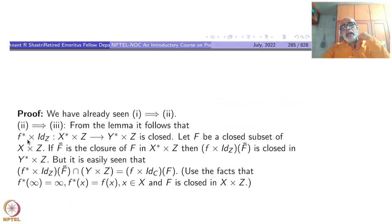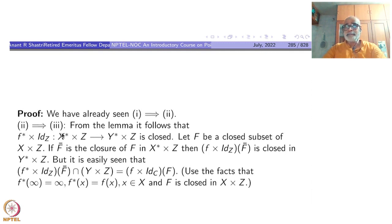From the lemma, it follows that f-star cross identity from X-star cross Z to Y-star cross Z is closed, since X-star is compact and Y-star is Hausdorff — any continuous function between such spaces is universally closed. For every Z, this is closed. That is precisely what we have concluded.